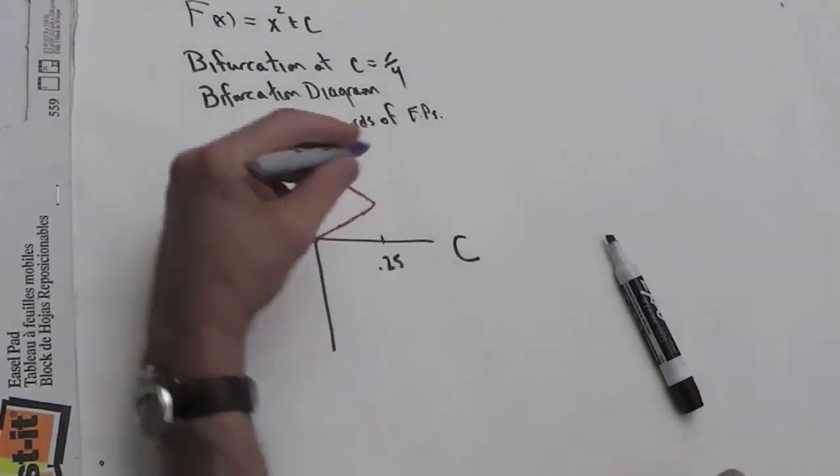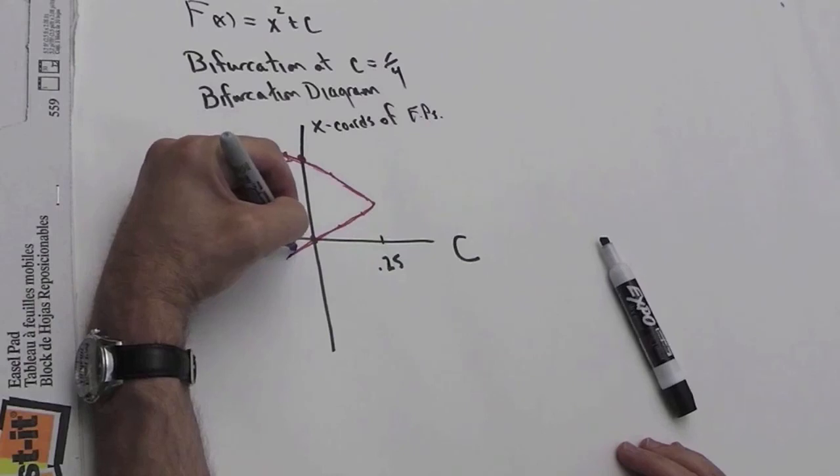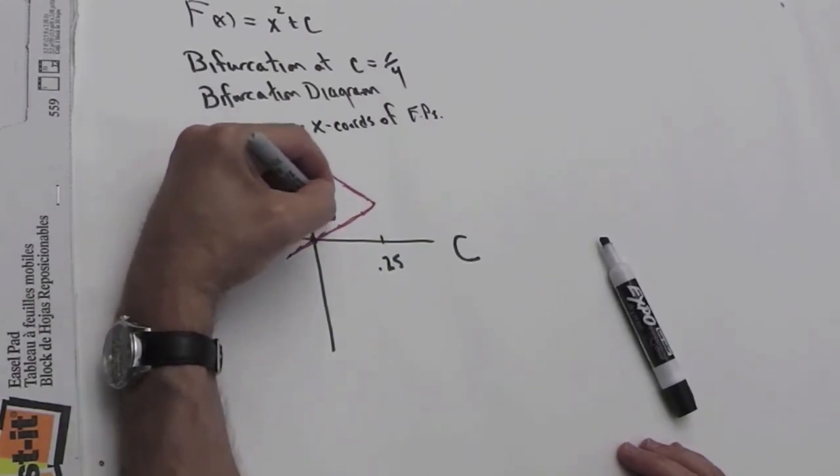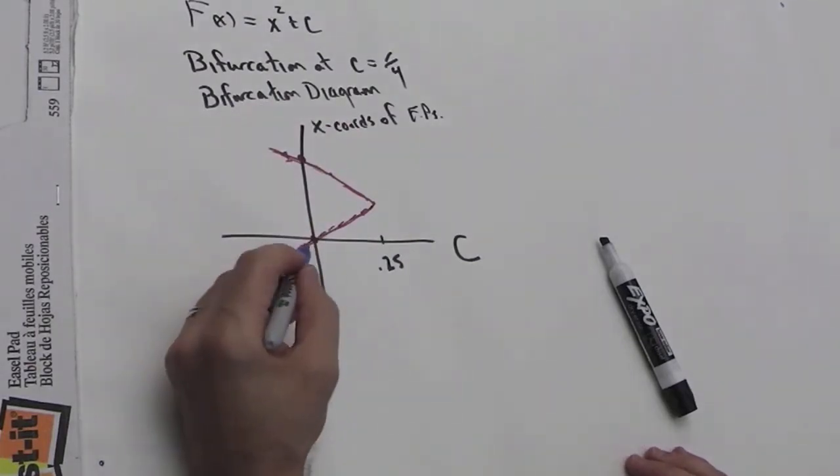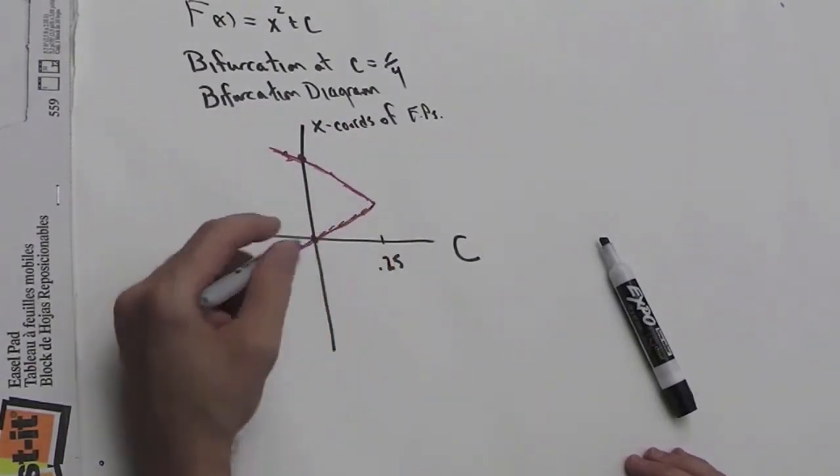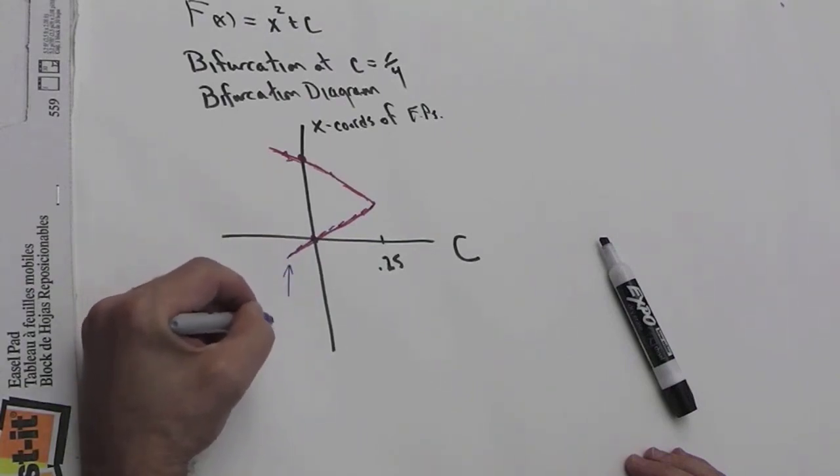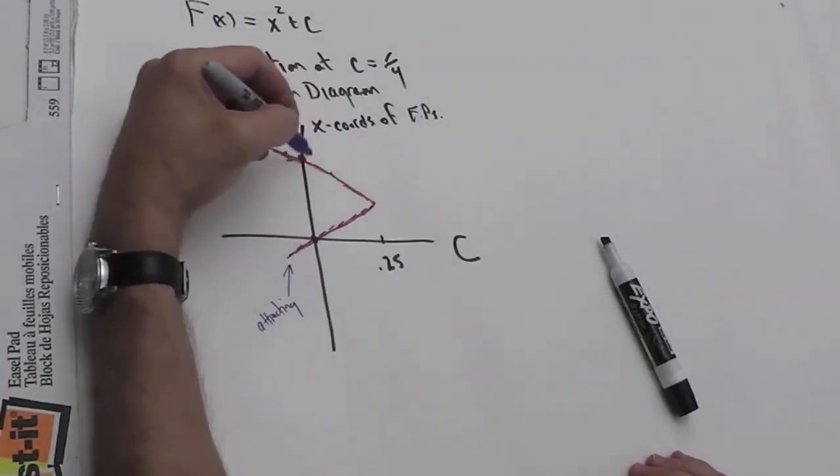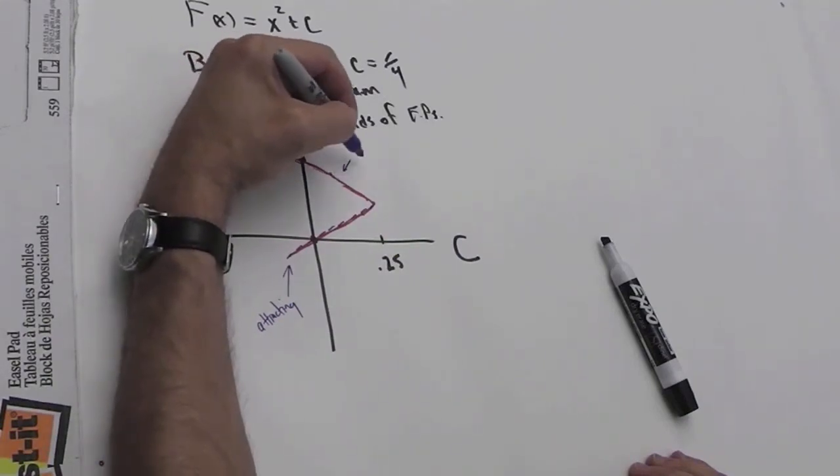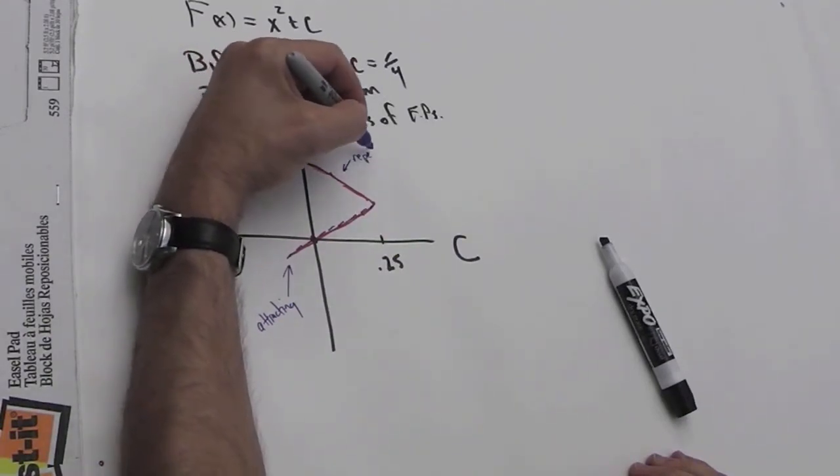And if we want to get even fancier, we could distinguish one of these branches of the bifurcation diagram by making it dashed or a different color to remind us that this fixed point was an attracting fixed point. No matter what c was, in this range of values, this was always the attracting fixed point. And this one represented the repelling fixed point. So, we can leave that solid.